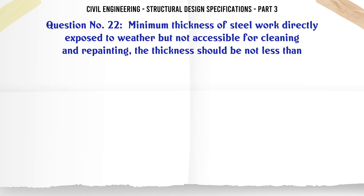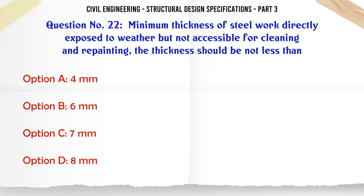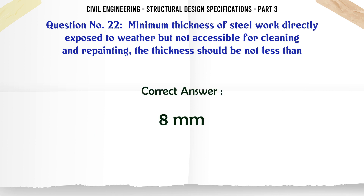Minimum thickness of steel work directly exposed to weather but not accessible for cleaning and repainting should not be less than: a. 4 mm, b. 6 mm, c. 7 mm, d. 8 mm. The correct answer is: 8 mm.